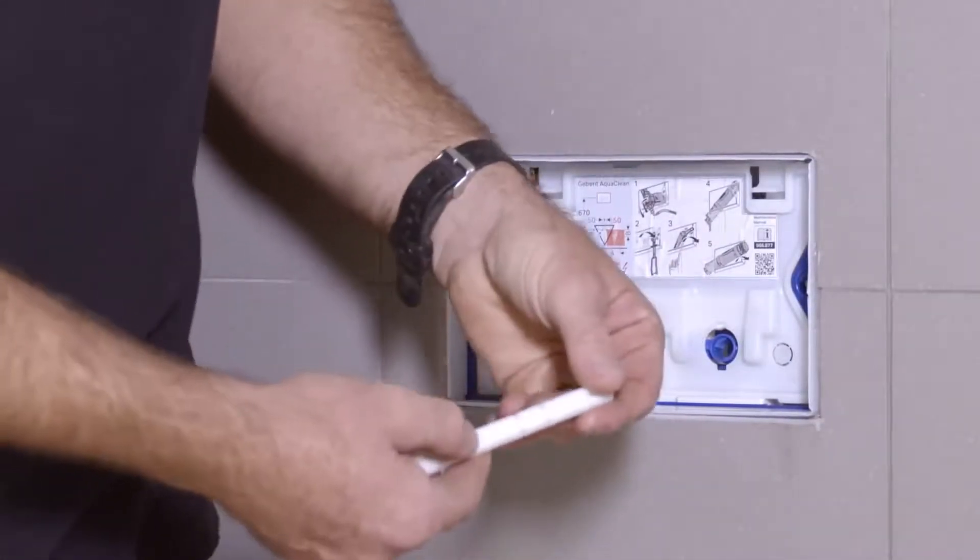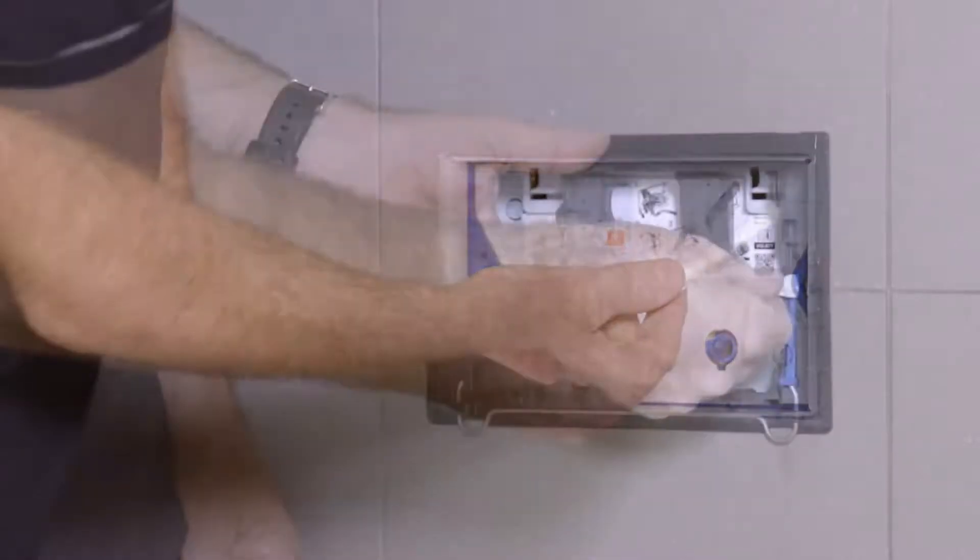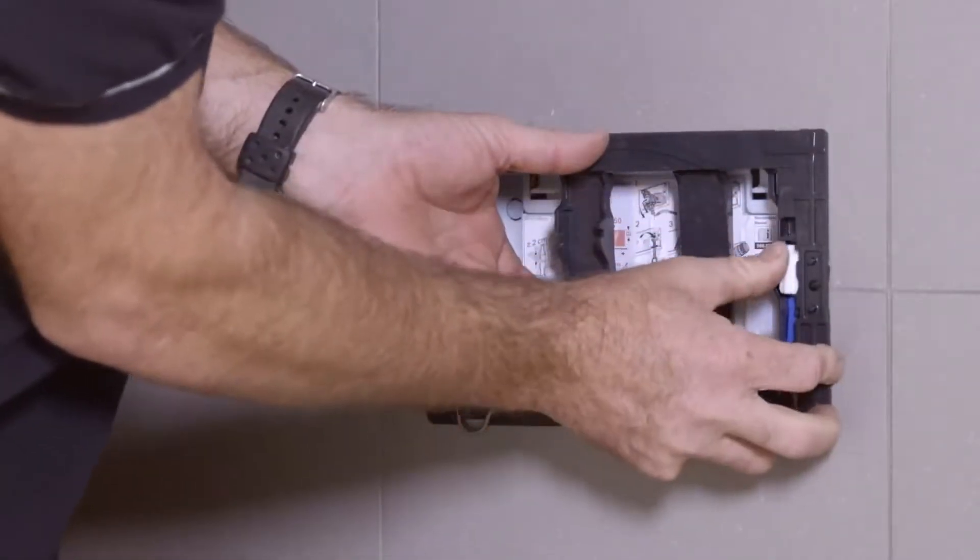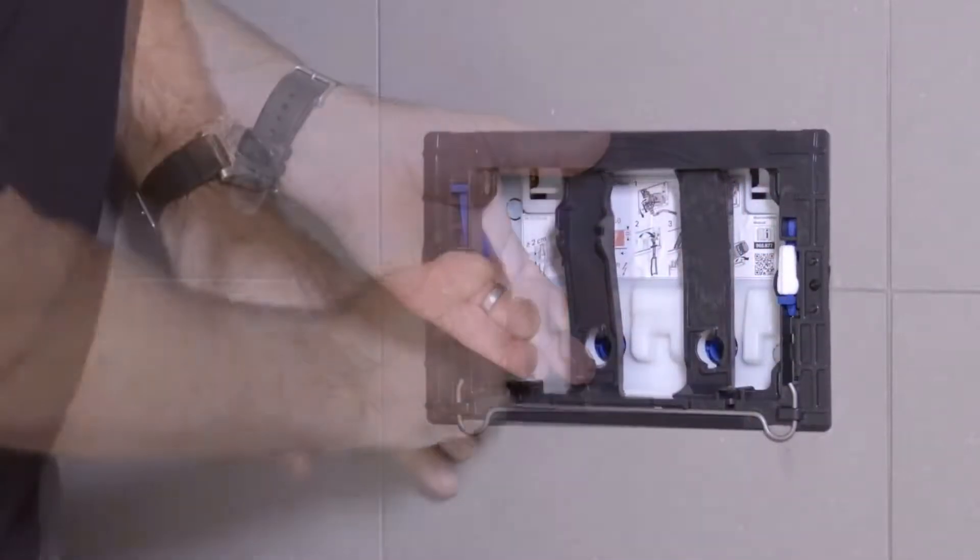If necessary, shorten the fastening bolts. Secure the fastening bolts by turning them 90 degrees, then lock the bolts in place using the blue pins.